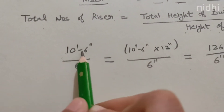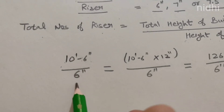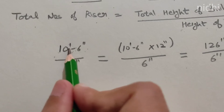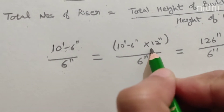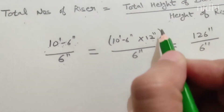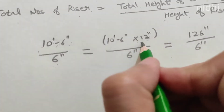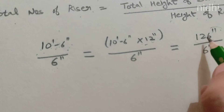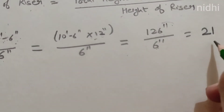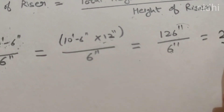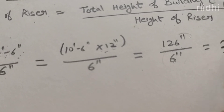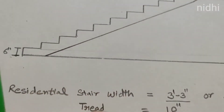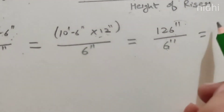We have a height of 10 feet 6 inches divided by 6 inches. To divide in inches, first convert feet to inches: 10 feet 6 inches multiplied by 12 inches, because 1 foot equals 12 inches. So it comes to 126 inches. Now divide by 6 — the riser — and we get 21. That means we need 21 risers or steps. If your height is 10 feet 6 inches and the riser is 6 inches, you will need 21 steps.